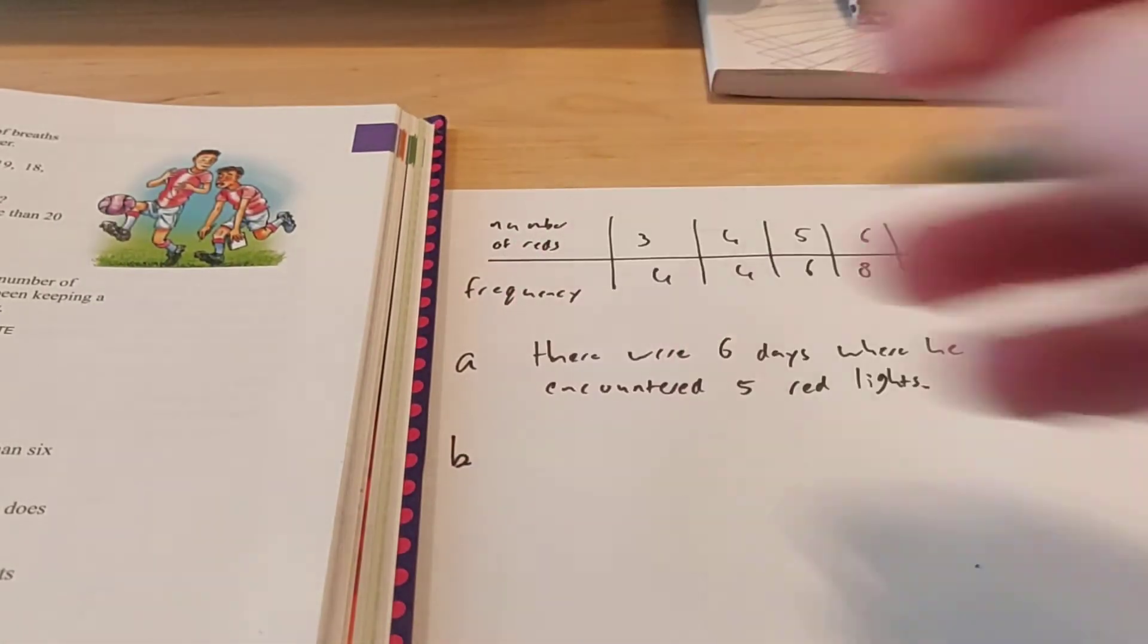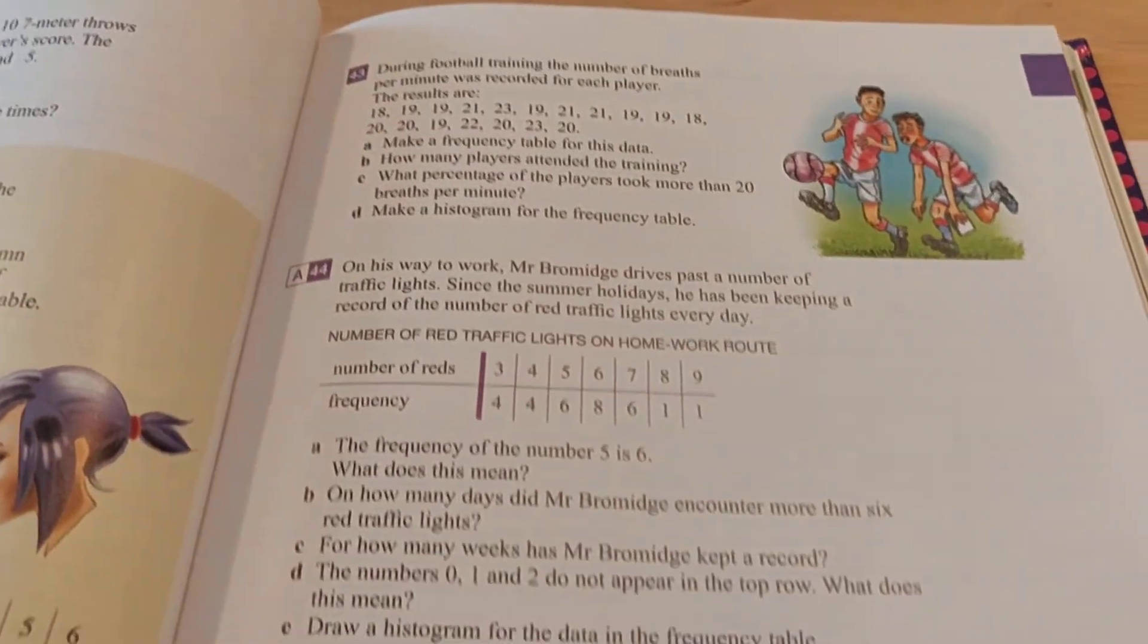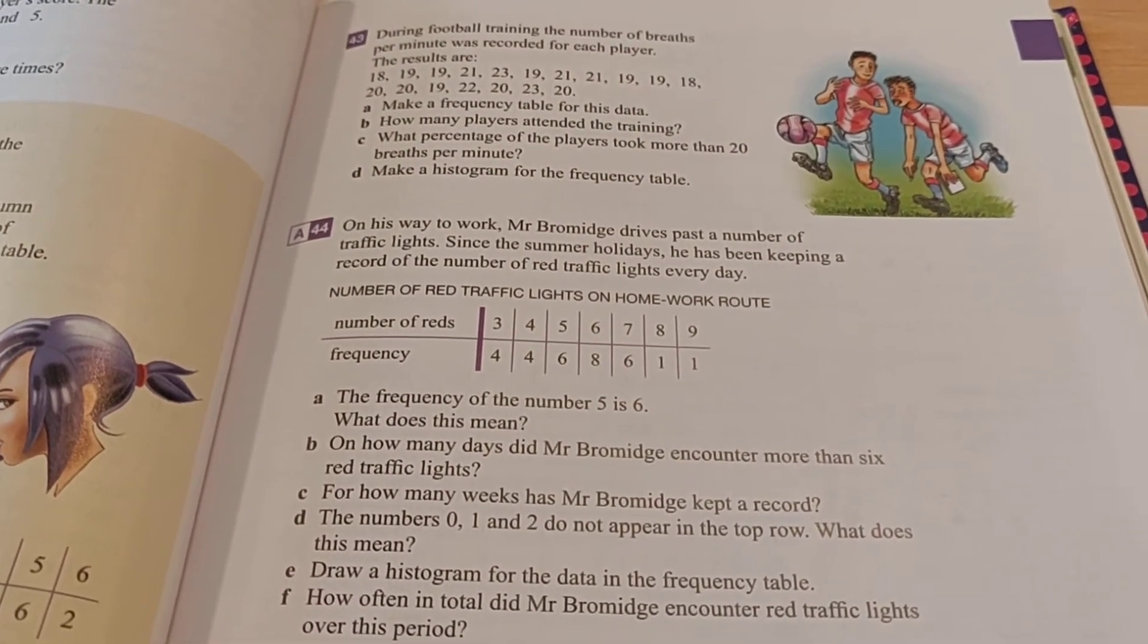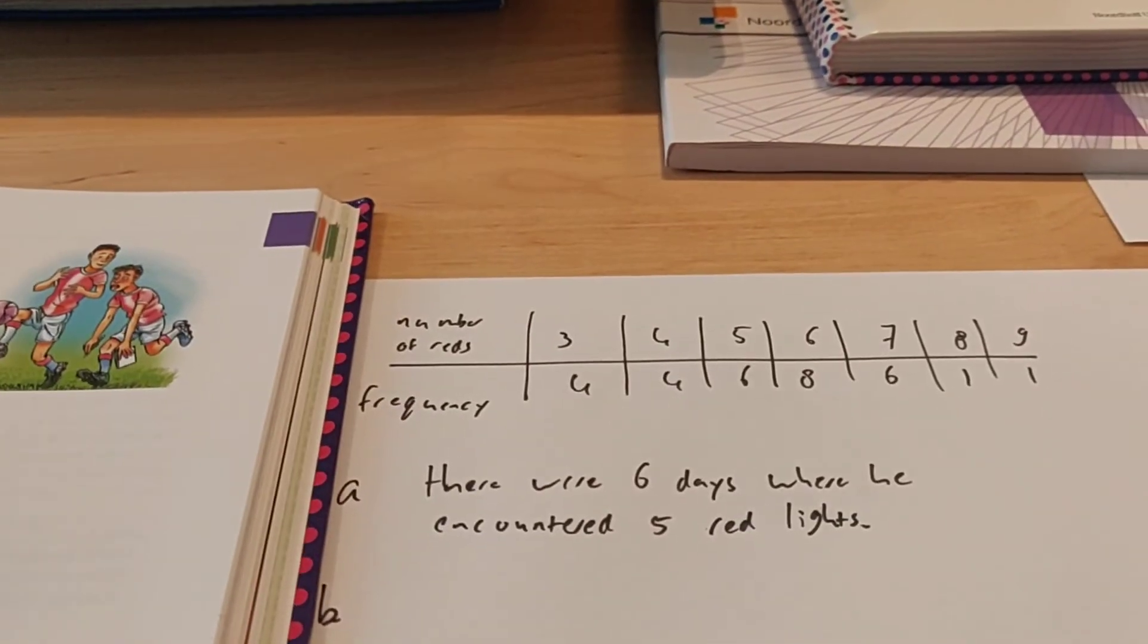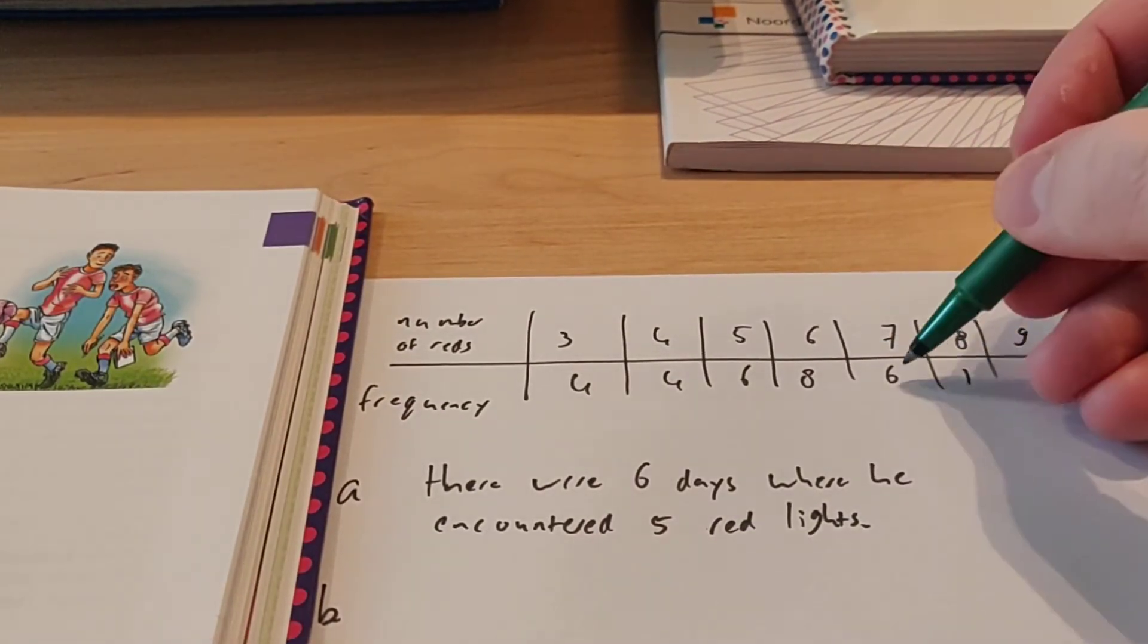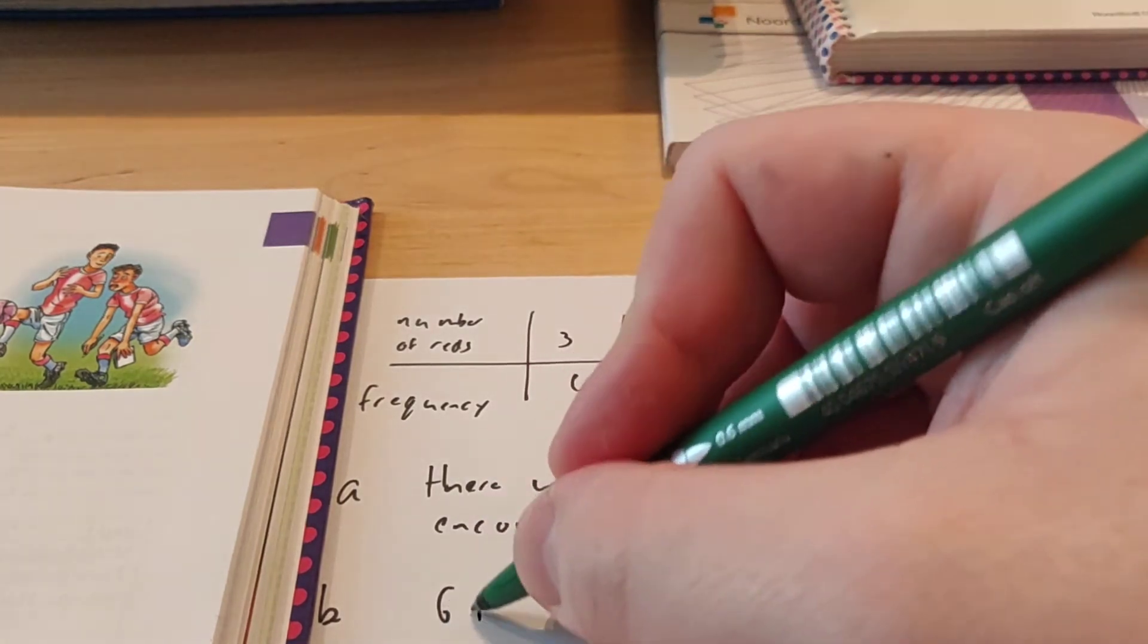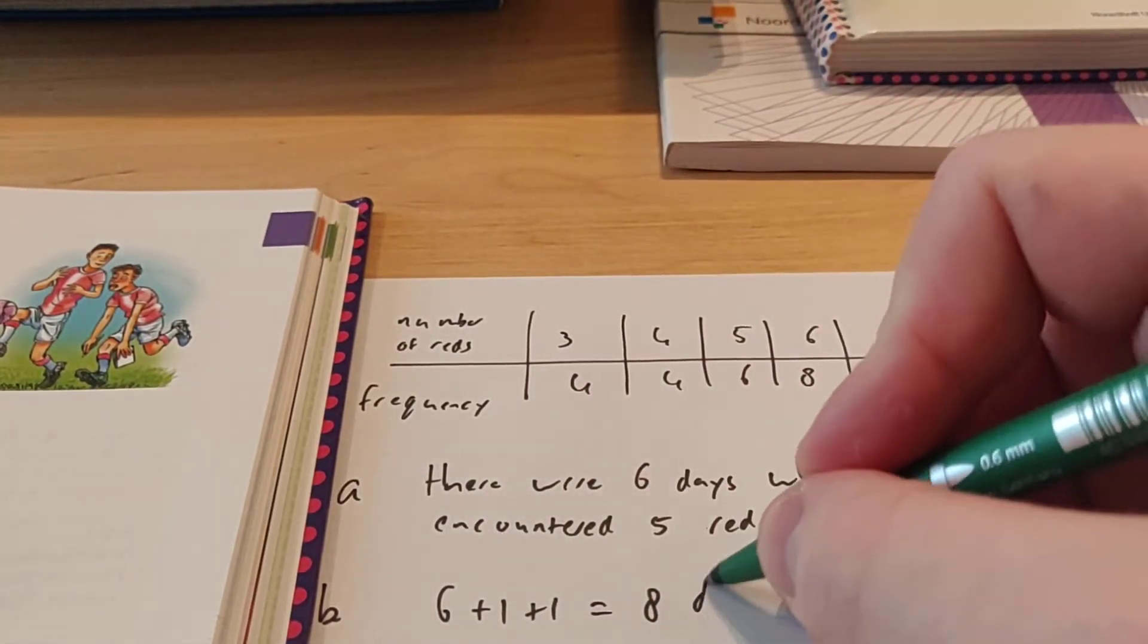Let's go to exercise B. It says, on how many days did Mr. Bromwich encounter more than 6 traffic lights? Well, red traffic lights. More than 6 means 7, 8 or 9. So that's 6 plus 1 plus 1. 6 plus 1 plus 1 is 8 days.